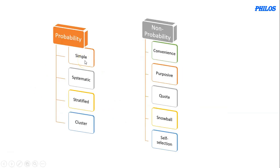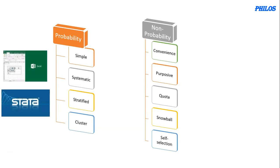For simple random sampling, elements are randomly selected from the population. There are many ways of performing simple random sampling, but I'm going to show you two formal ways of doing it. At the end of the video I'll show you how to use Microsoft Excel and Stata to perform simple random sampling.